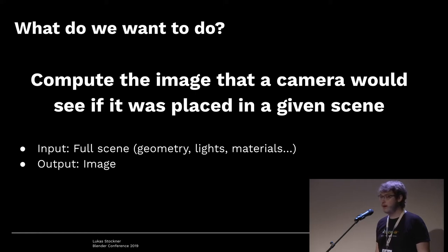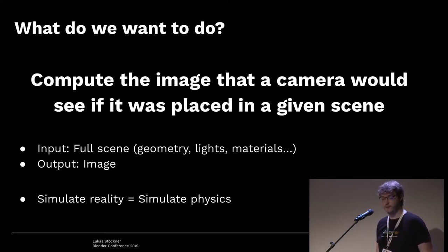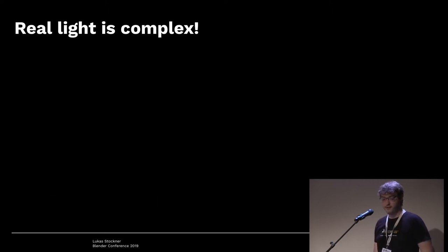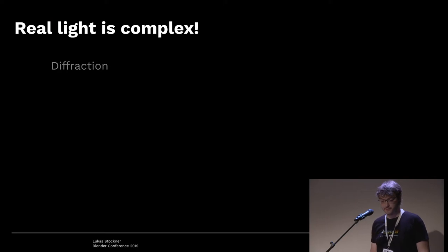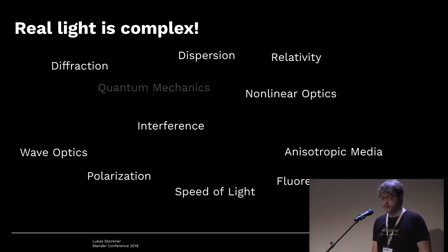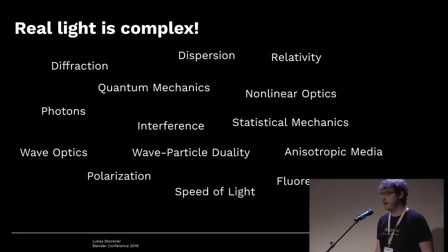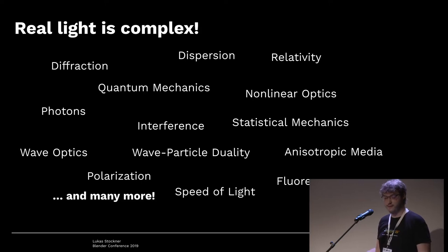To get that image, we want to get what we would get in the real world, so we need to simulate reality — and to do that, we need to simulate physics. However, real light is pretty complex. Here's just a selection of some stuff you might need to consider if you really want to simulate real life. And of course, that's not everything — there's way more.